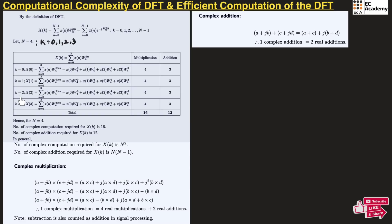If we put different values for k, we get different equations. For example, if we take k is equal to 0, it will be x of 0 equal to summation of n equals 0 to 3, x of n times omega of 4 to the power of 0 into n. Expanding this, we get x of 0 times omega of 4 to the power of 0, plus x of 1 times omega of 4 to the power of 0, plus x of 2 times omega of 4 to the power of 0, plus x of 3 times omega of 4 to the power of 0.